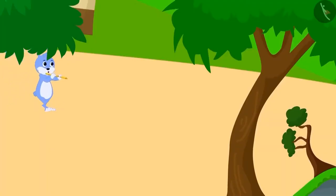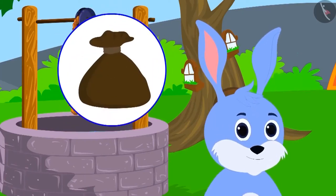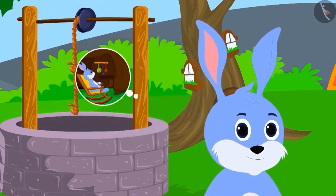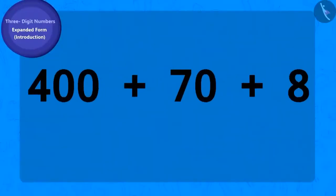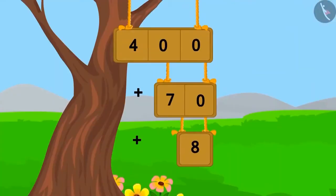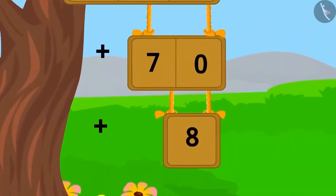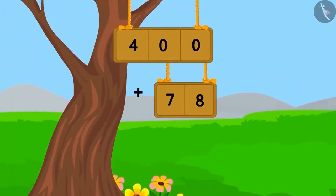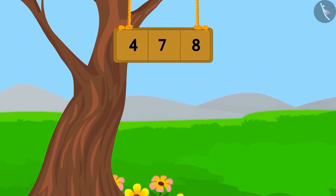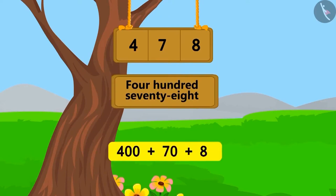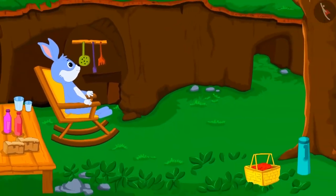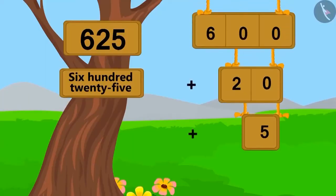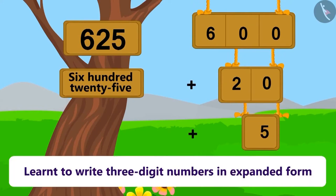Bunny got tired going around villages and decided to buy a small house with his prize money. He drove away all the rats from the last village and got coins as a reward. Can you identify the number from this expanded form? First we add 70 and 8 to get 78. We know 478 is 78 ahead of 400. In this way we can identify a number through its expanded form. In this lesson we learned to write three-digit numbers in expanded form.